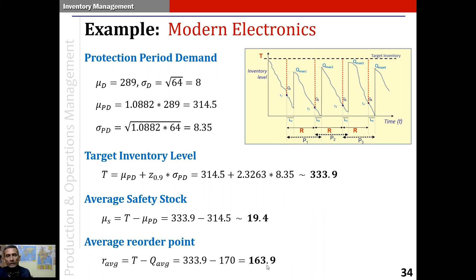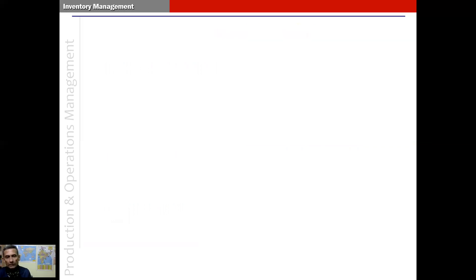The reorder point is quite high — nearly equal to the quantity ordered (170 vs. 163.9). This is a specialty of the periodic review system: the reorder point is fairly high given that demand is variable and we don't review continuously. Because we review at fixed periods of time, between two reviews there can be a stockout, and since backordering is prohibitive, we keep higher levels of inventory compared to the continuous review system. This concludes our discussion on the periodic review system.